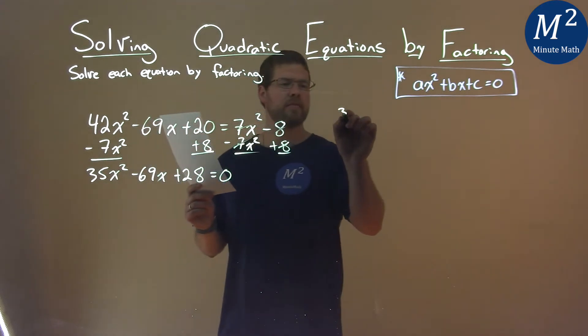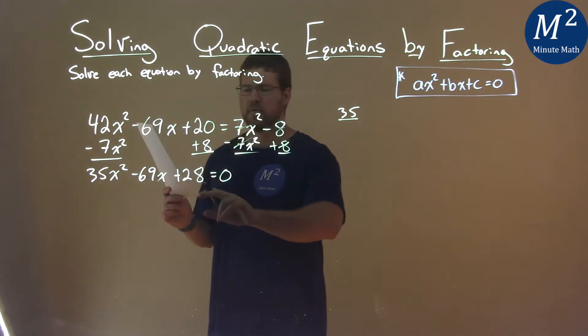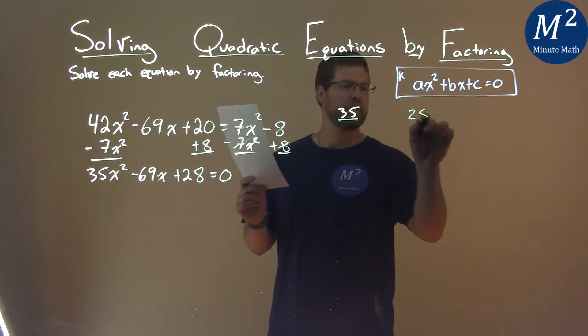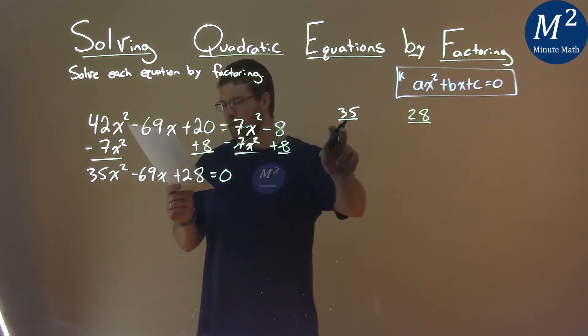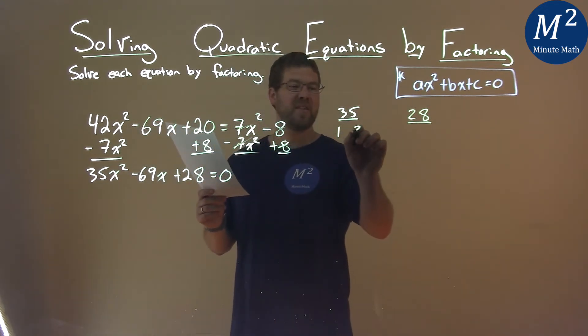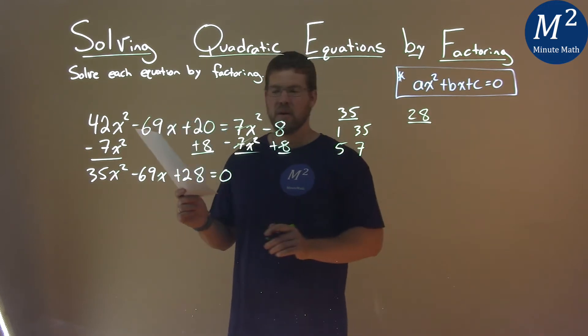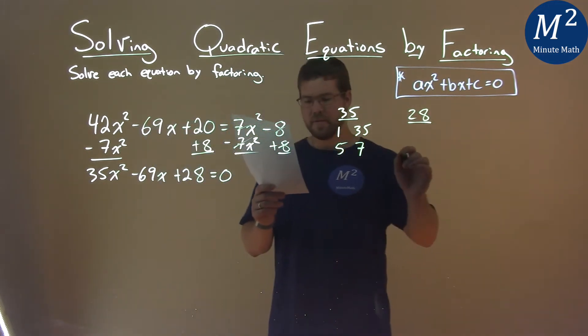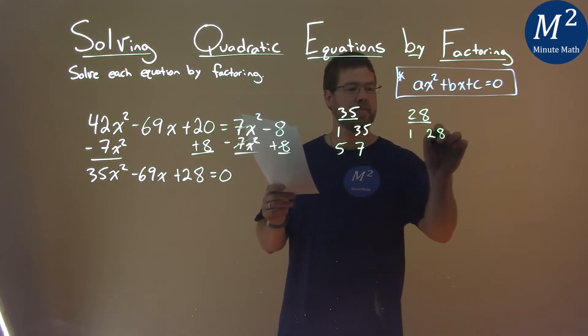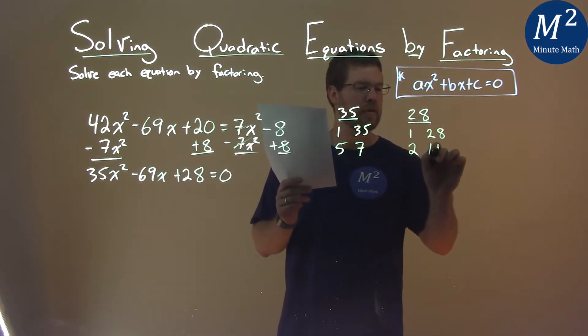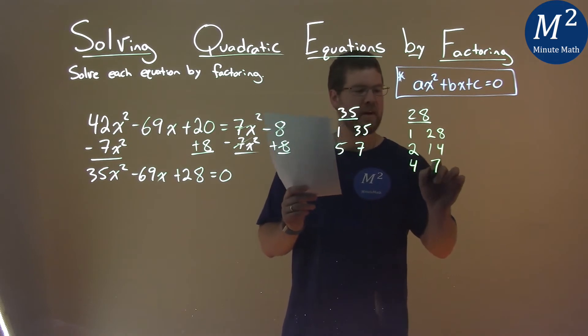Our a is 35, and our c value is 28. What two numbers multiply to 35? That's 1 and 35, and 5 and 7. What pairs of numbers multiply to 28? That's 1 and 28, 2 and 14, and 4 and 7.